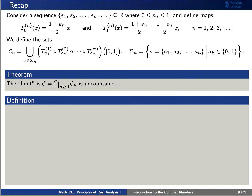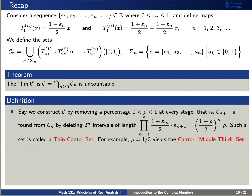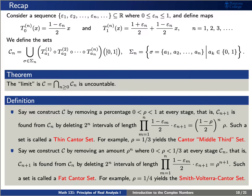We realize that we have two definitions we can make from this general construction. First, let's say that we construct the set c by removing a certain percentage rho at every stage. What we find is the thin Cantor set. For example, when rho is one third, we find the Cantor middle third set. We can also construct c by removing an amount rho to the n at every stage. What we find here is called the fat Cantor set. For example, when rho is one quarter, this is the Smith-Volterra-Cantor set from before.